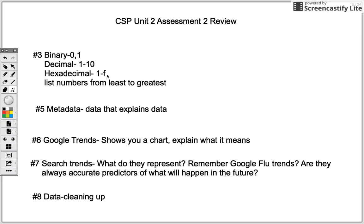Hexadecimal goes from 1 through F, so there are 16 digits: 0, 1, 2, 3, 4, 5, 6, 7, 8, 9, A, B, C, D, E, F. Make sure you remember how to convert these. If you look in your notebook or look up the word hexadecimal online, you should be able to study.